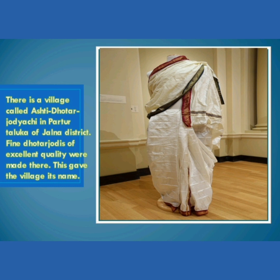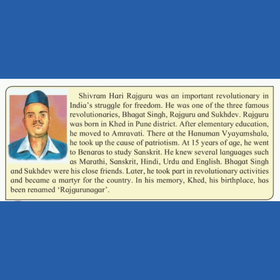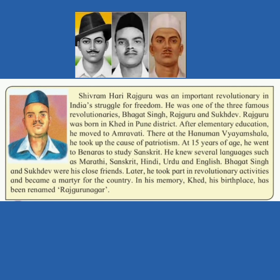Have you heard about Shivram Hari Rajguru? He was an important revolutionary in India's struggle for freedom — one of the three famous revolutionaries: Bhagat Singh, Rajguru and Sukhdev. Rajguru was born in Khed in Pune district. After elementary education, he moved to Amravati, where at the Hanuman Vyayam Shala he took up the course of patriotism. At 15 years of age, he went to Banaras to study Sanskrit.